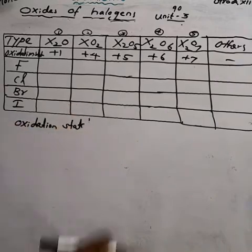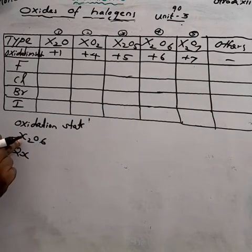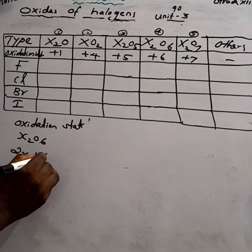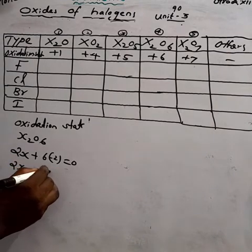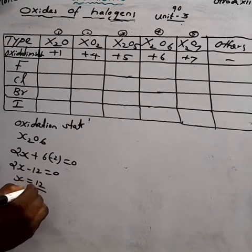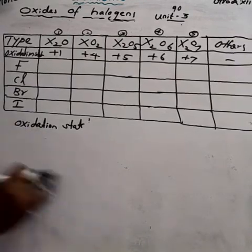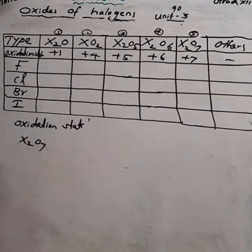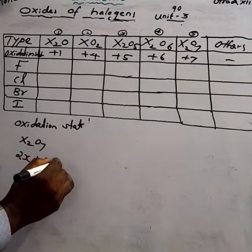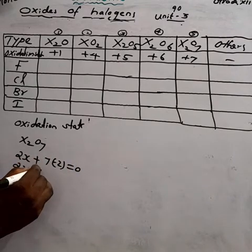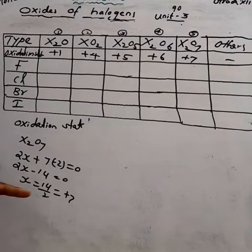For X₂O₆: 2X + (6 × −2) = 0, so 2X − 12 = 0, X = +6 oxidation state. For X₂O₇: 2X + (7 × −2) = 0, so 2X − 14 = 0, X = +7 oxidation state.